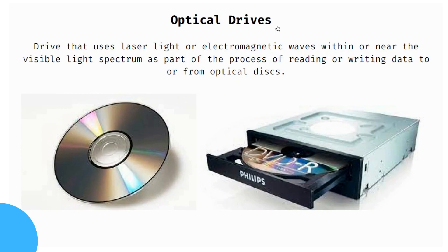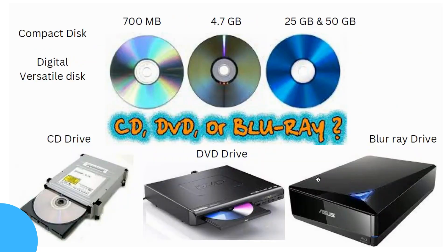The next type is optical drives, including CD drives and DVD drives. Optical drives use laser light to read data. CDs and DVDs store data optically, and you can also burn data onto them. This is an optical drive with examples of CD and DVD drives.